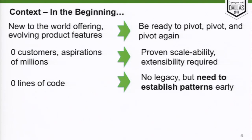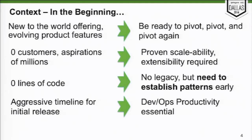If you've worked on legacy systems, it's no fun. But we got to start the legacy. When you start a new legacy, you want to put it on the right footing. One of the things we wanted to do is establish good patterns early. We had an aggressive timeline — we really wanted to get this thing out to market quickly. As a result, developer productivity and operations productivity were key considerations. Our team was doing both, so we can call it DevOps productivity.